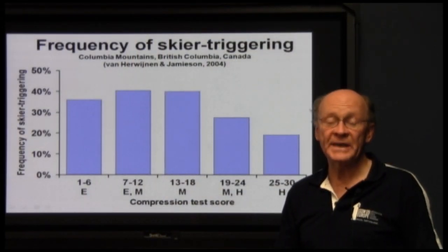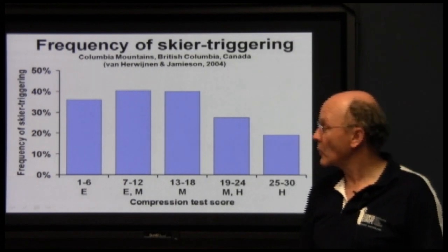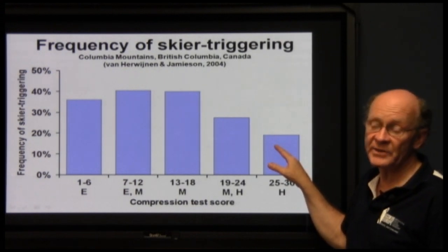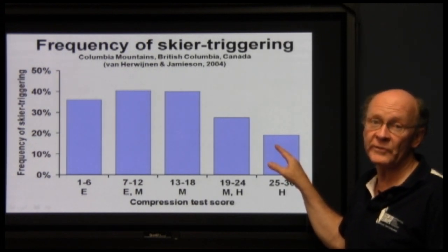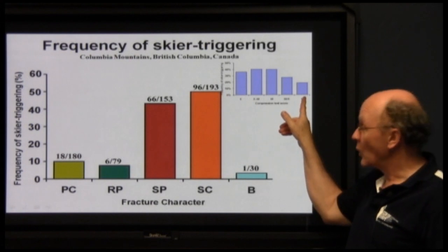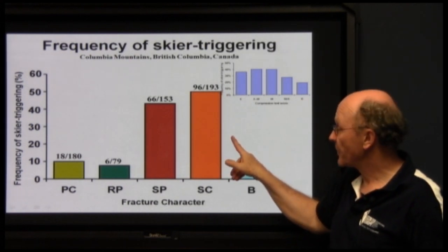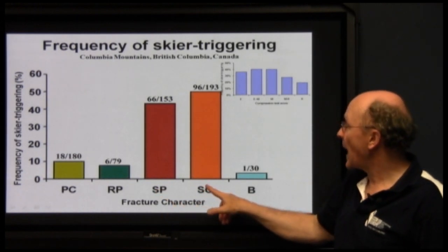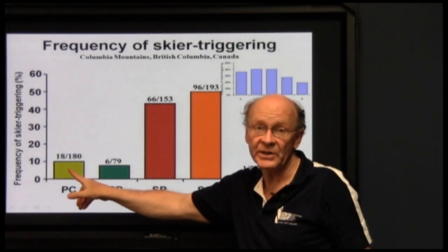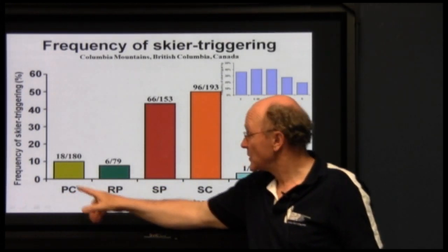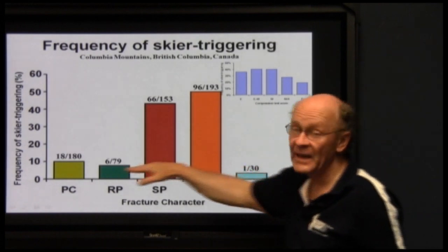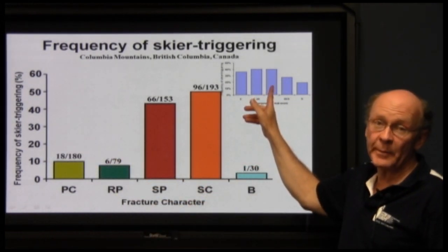Here again is our graph of the frequency of skier triggering without fracture character — looking only at number of taps — and it does drop off as the number of taps increases, but not nearly as much as we'd like. Here are the results of Alec's study for fracture character. For sudden planar or sudden collapse, we see quite a high frequency of skier triggering. For the other three kinds — break, resistant planar, and progressive compression — we see a much lower frequency. Fracture character distinguishes whether skier triggering is likely or unlikely much better than paying attention to the number of taps only.